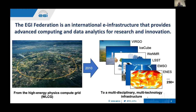The grid technology was created and gradually evolved into a more multi-disciplinary, multi-technology infrastructure — not only the WLCG and high energy physics people were supported, but also other scientific communities like Virgo, IceCube, NMR, LSST, biology, oceanography, and climate change. There are now more than 250 communities supported, and what started as EGEE is now basically an infrastructure with several ways of accessing advanced computing and data analytics for research and innovation.